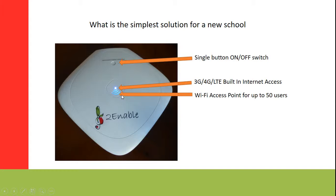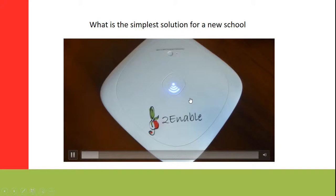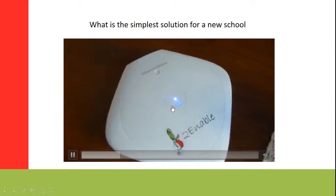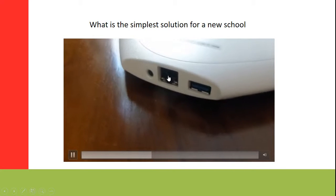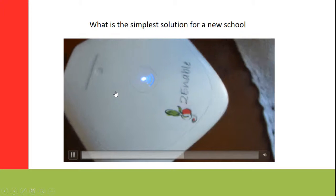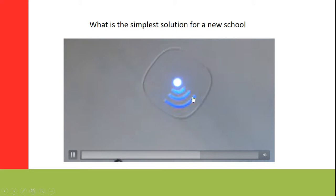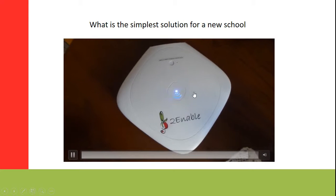This is our introduction to a digital library — the basic 2Enable digital library. To show you in terms of video, there's a flashing light showing that Wi-Fi is on. At the back of the device there's a port for a local area network so you can connect it to an existing network, a USB connector, and a power connector with an external charger. The flashing light indicates Wi-Fi is on, and the solid light shows it is connected to the internet using the built-in SIM card.